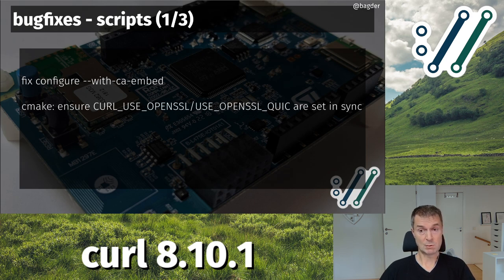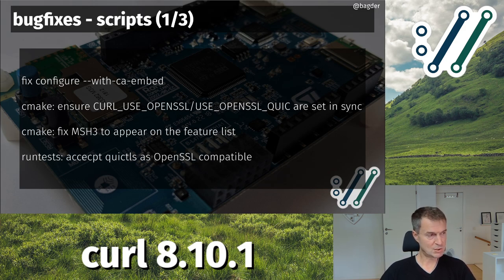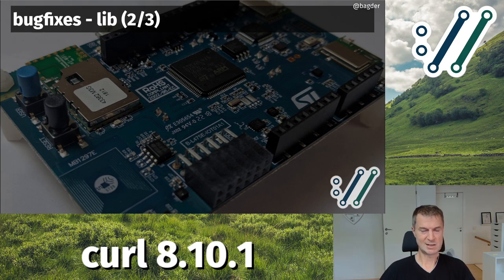We also fixed another CMake problem: when building with the OpenSSL QUIC backend, we now make the MSQUIC H3 appear correctly in the feature list. We also make sure that when you run tests after building curl with the QuicTLS OpenSSL fork, it's actually treated as OpenSSL, so it'll run more tests than before — because it accidentally didn't consider it OpenSSL. It's technically not OpenSSL, but it is an OpenSSL fork.